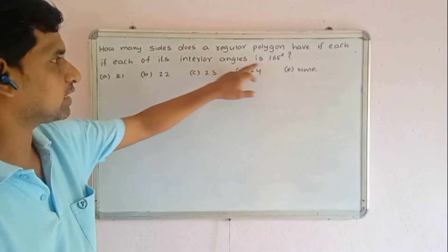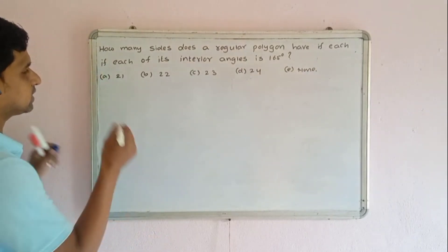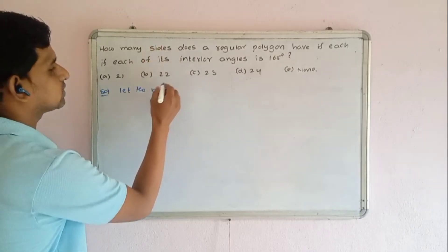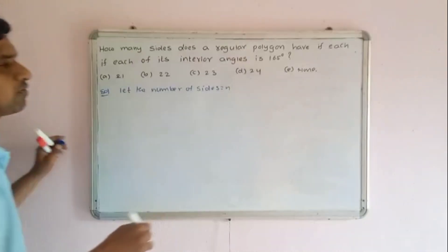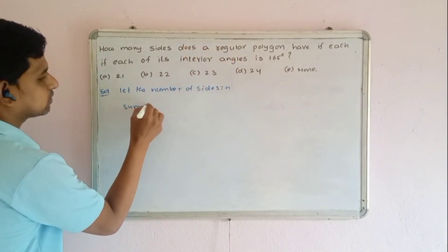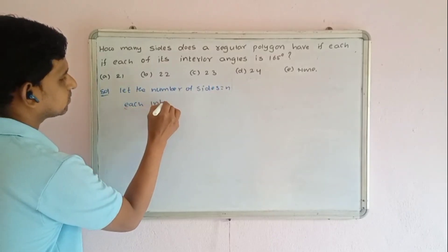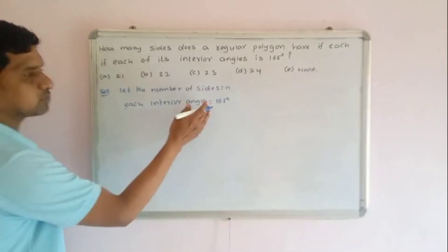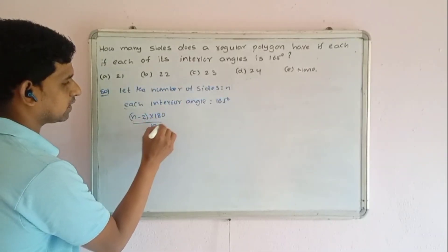Each interior angle is 165 degrees. To find the number of sides, let the number of sides equal n. The formula for each interior angle of a regular polygon is: (n minus 2) into 180 divided by n equals 165.